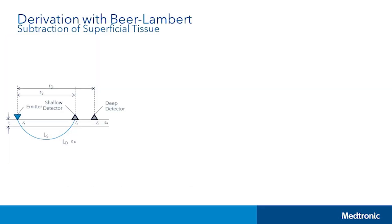First, let's examine what the path of light may look like for a reflectance-based measurement from a light source to a detector — what we'll call the shallow detector — in a scattering medium that has some superficial thickness, denoted T in the figure on the left. The blue line describes the light path from the emitter that travels a certain distance below the surface in that banana-shaped path.